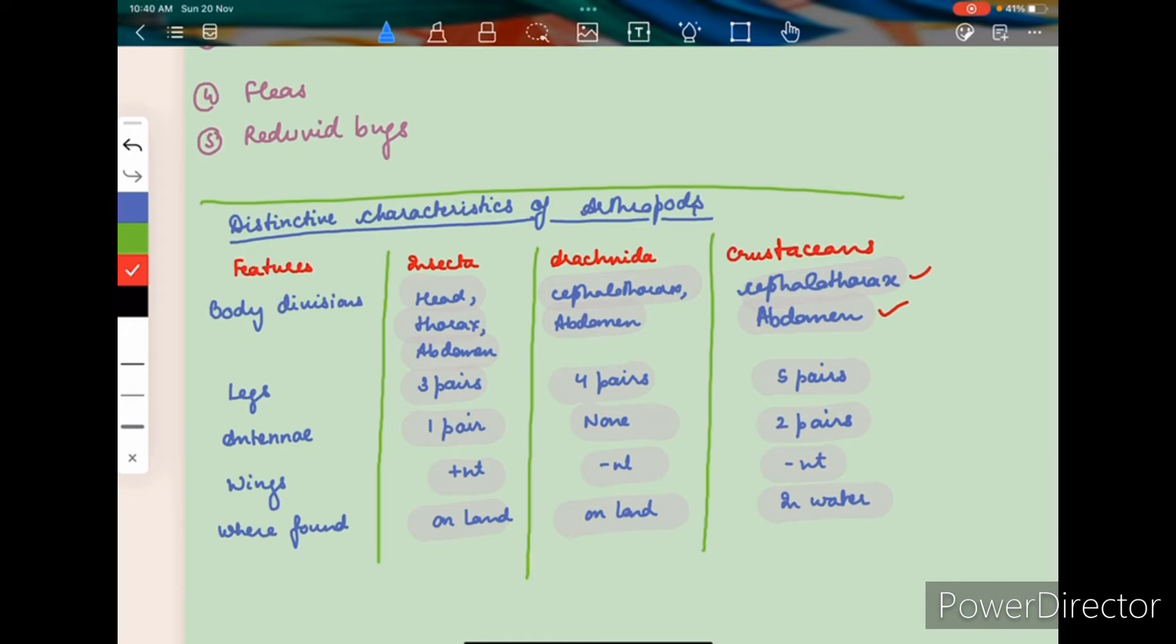Whereas the Arachnida, which includes the spiders, have got only two body divisions, the cephalothorax and the abdomen. They have got four pairs of legs, no antenna, wings are absent, and they are also found on the land.